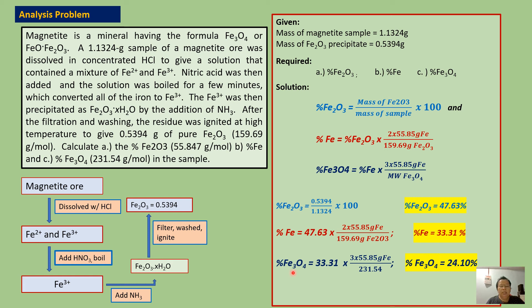Lastly, solving for percent Fe3O4 equals percent iron, which is 33.31 times 3 times 55.85 grams iron divided by 231.54 grams of Fe3O4. Notice I multiply the molar mass of iron by 3 because 1 mole of Fe3O4 contains 3 moles of iron. So the answer is percent Fe3O4 is 24.10 percent.